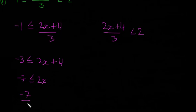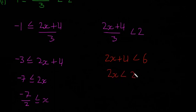We're going to get -7/2 ≤ x. Now I'm going to solve this one on the other side. Multiply both sides by 3: 2x+4 < 6. Move the 4 over: 2x < 2 because 6-4 is 2. Then x < 1.